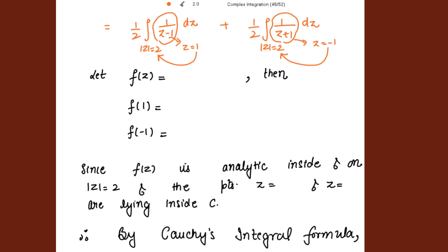What is the function? The function f(z) equals 1 — the numerator. Since the function is constant, the constant function is always analytic. So f(z) is analytic inside and on |z| = 2. The value of the function at z = 1 is 1, and the value at z = negative 1 is also 1. The points z equal to 1 and z equal to negative 1 are lying inside C. So by Cauchy's integral formula we proceed.